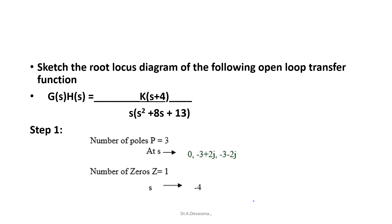Step 1: First we have to identify the number of poles and number of zeros from the given problem. In this problem we have three poles. They are at s = 0, s = -3 + 2j, and s = -3 - 2j. The number of zeros Z is equal to 1. That is, P = 3 and Z = 1.